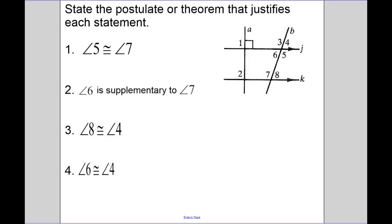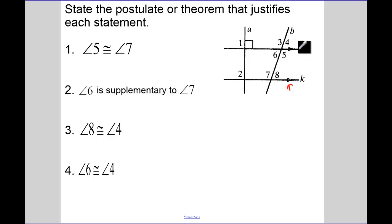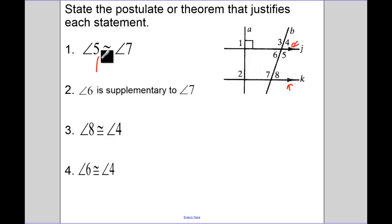State the postulate or theorem that justifies each statement. The little arrows mean we have parallel lines. Angle 5 is congruent to angle 7 — what special angle pair is that? Those are alternate interior angles. So parallel lines gives us alternate interior angles congruent.